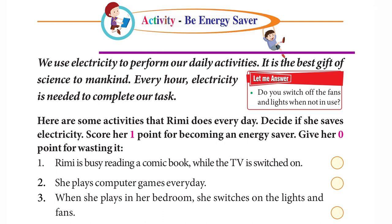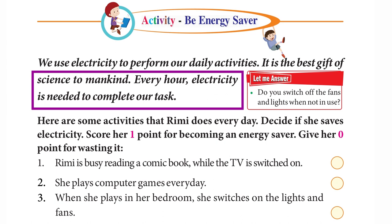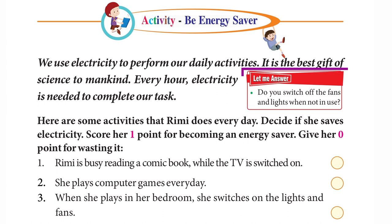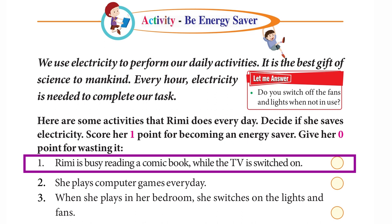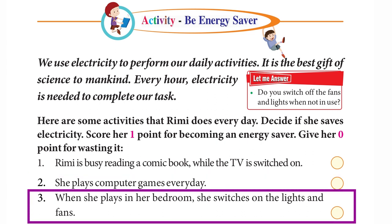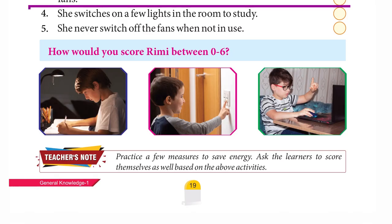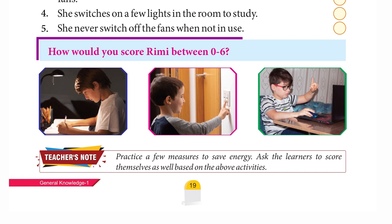Chapter 11: Energy Saver. We use electricity to perform our daily activities — it is the best gift of science to mankind. Do you switch off fans and lights when not in use? Here are some activities Remy does every day — decide if she saves electricity and score her 1 point for saving. Remy reads a comic while the TV is on — 0 points. She plays computer games every day — 0 points. She switches on lights and fans while playing in her bedroom — 0 points. She switches on a few lights to study — 1 point. She never switches off fans when not in use — 0 points.